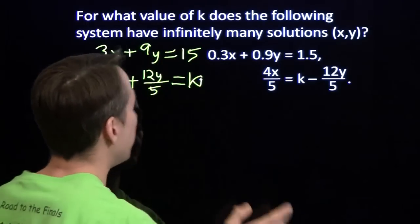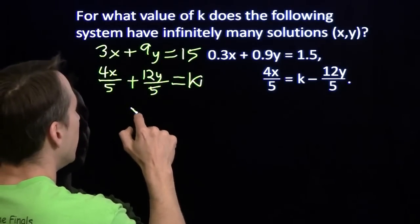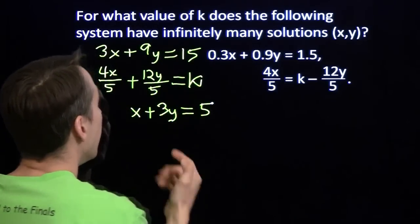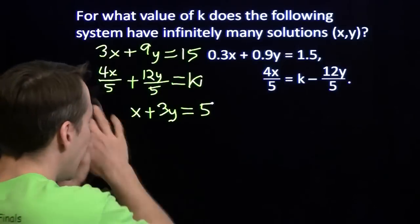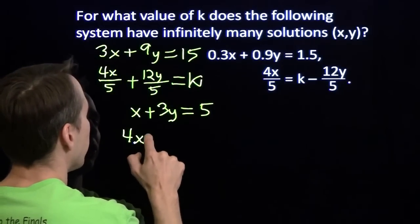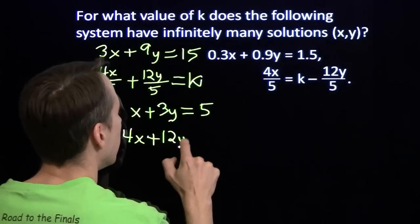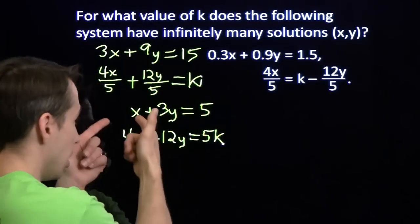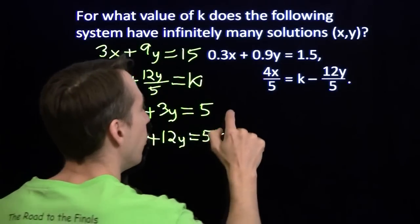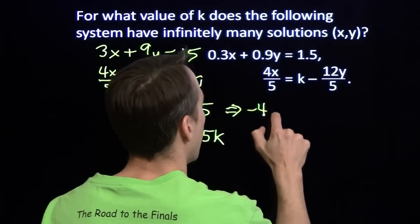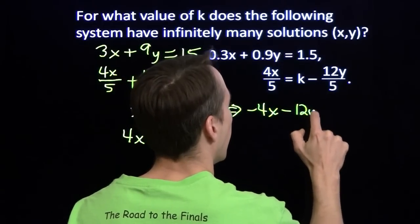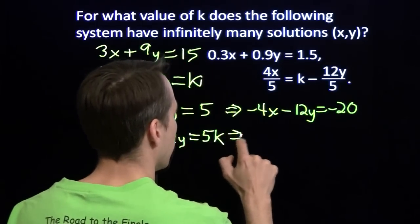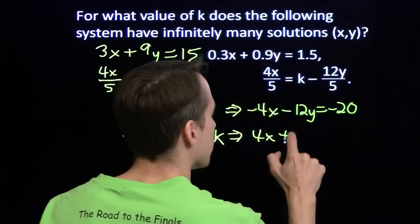That's better. But this first equation, I can divide everything by 3. That'll make it even easier. 3, 9, and 15, all divisible by 3. Divide everything by 3, and I'll get x plus 3y equals 5. Now here I'm going to multiply everything by 5, get rid of those fractions. And I'll get 4x plus 12y equals 5k. Now I want to set up an elimination. I'm going to multiply this equation by negative 4. And I'll have negative 4x minus 12y equals negative 20. And here we'll just copy that equation over, setting up our elimination.